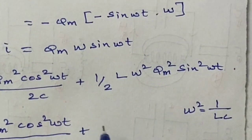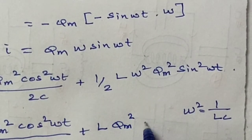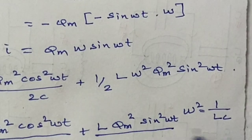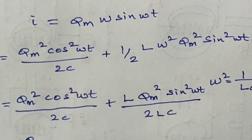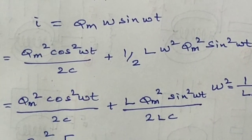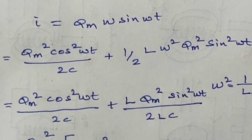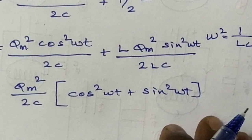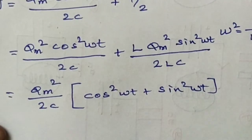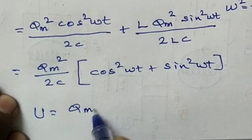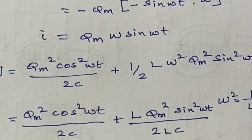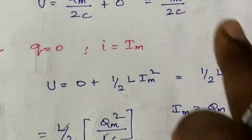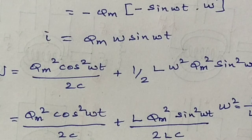Substituting omega squared equals 1 by LC, the L cancels, giving Q_M squared sine squared omega T divided by 2C. Taking Q_M squared over 2C as a common factor: epsilon equals Q_M squared by 2C times (cosine squared omega T plus sine squared omega T). Since cosine squared omega T plus sine squared omega T equals 1, the total energy in all three cases is Q_M squared by 2C, confirming the total energy of the system remains constant.